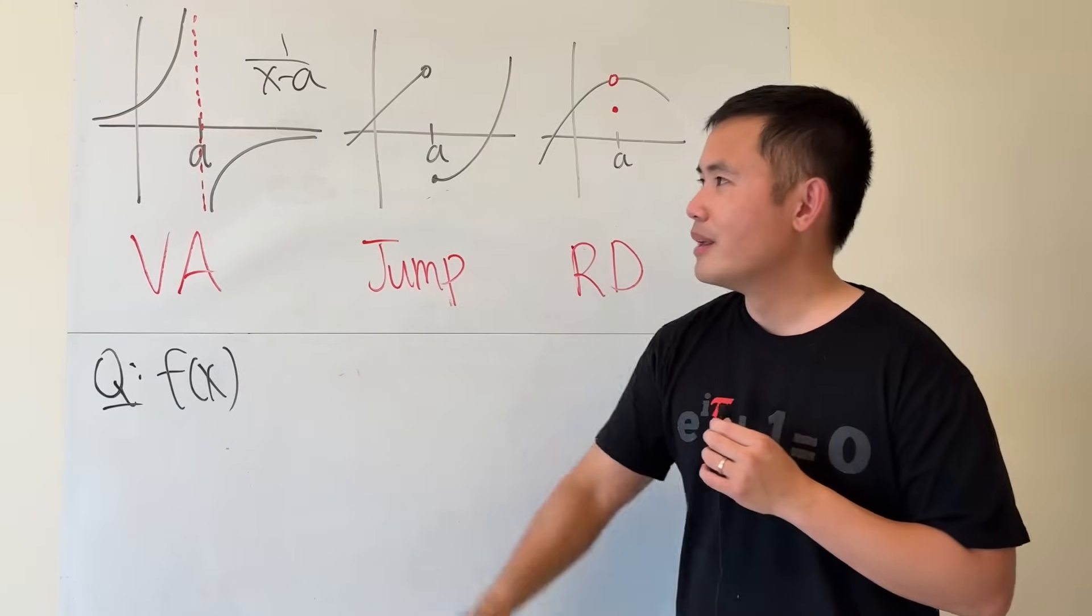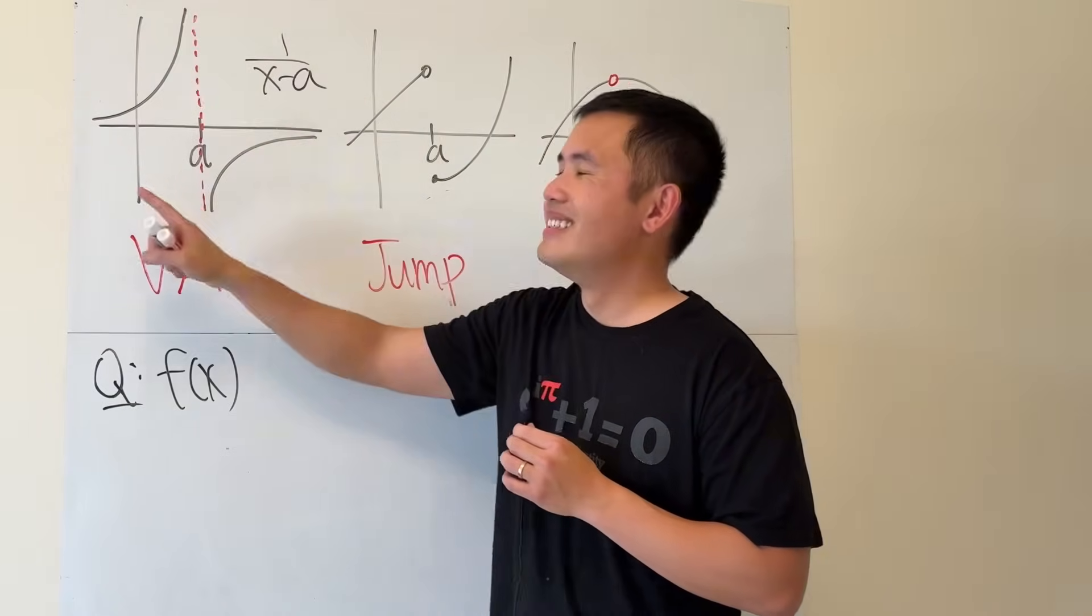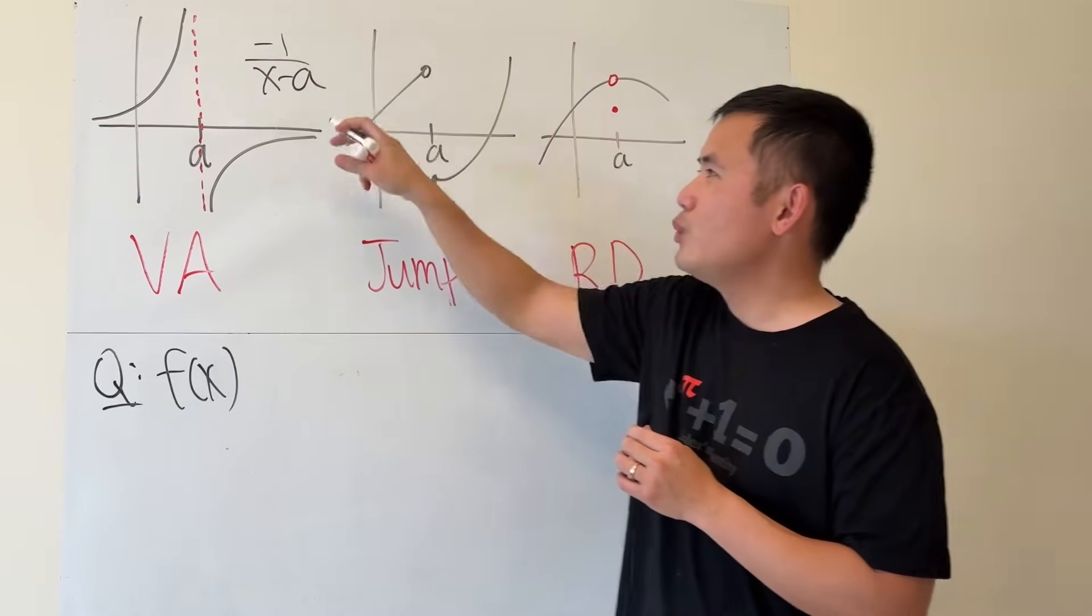I know what you are thinking. Right here, this part goes up, right? So this is really negative 1 over x minus a.